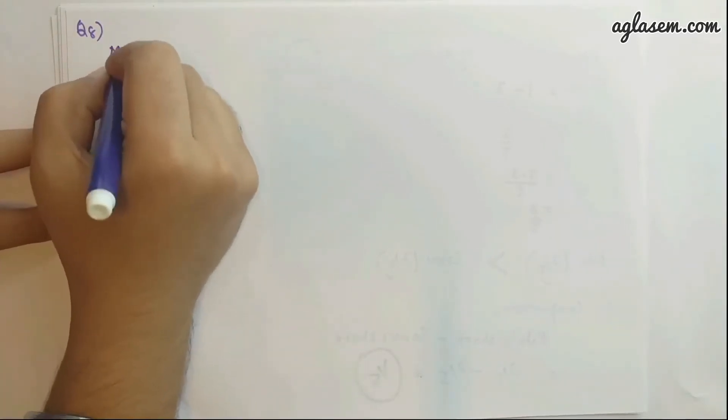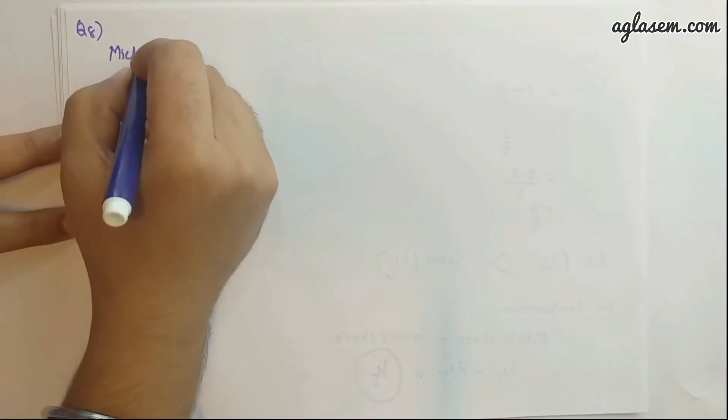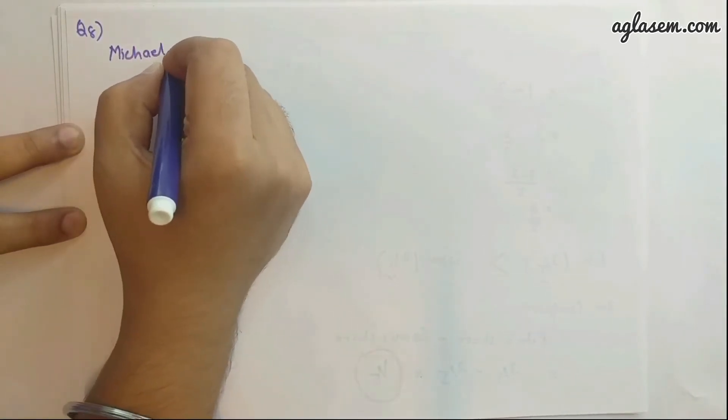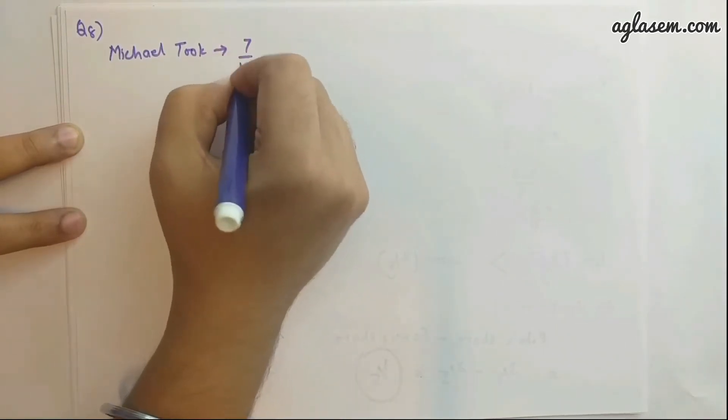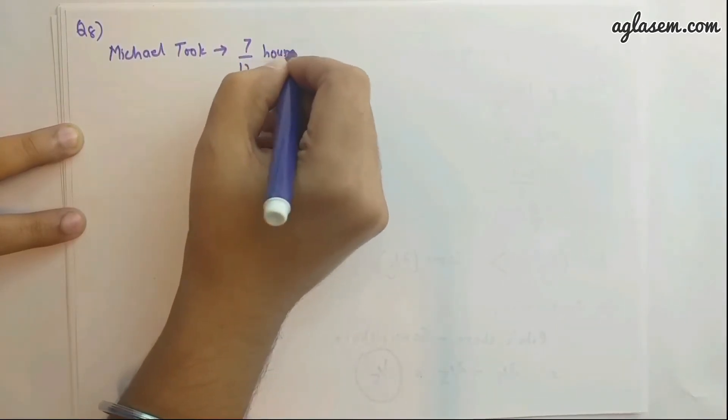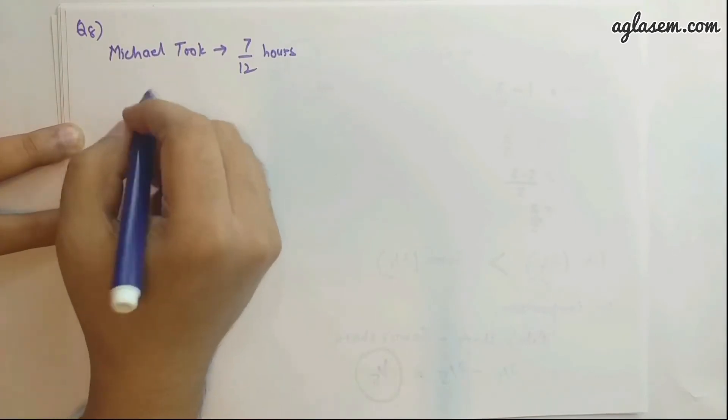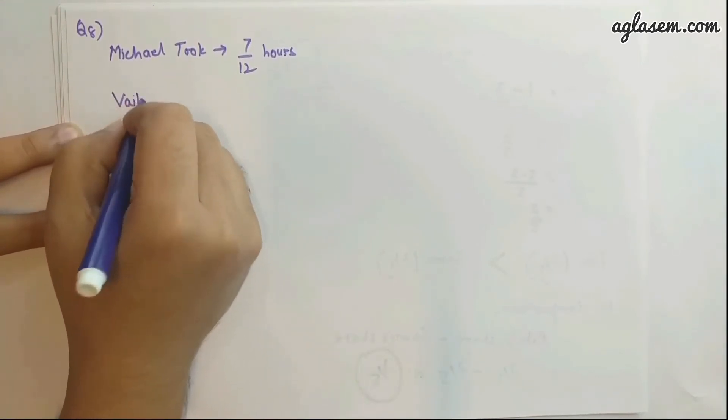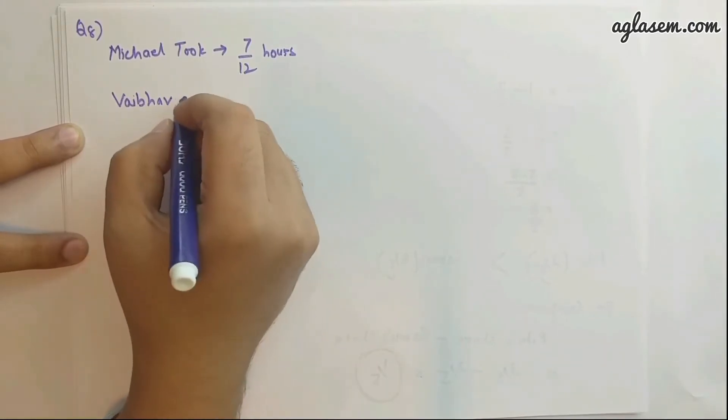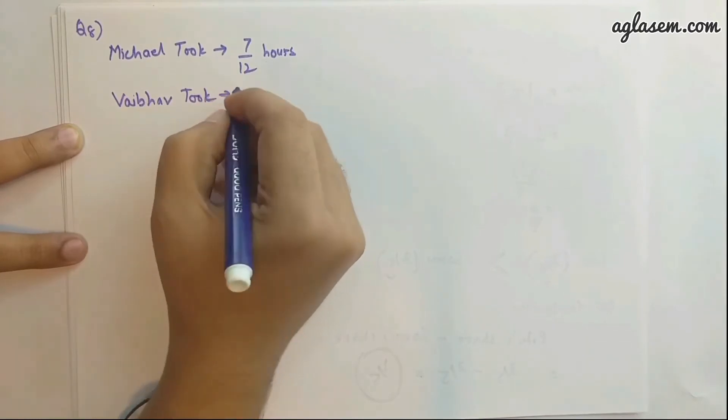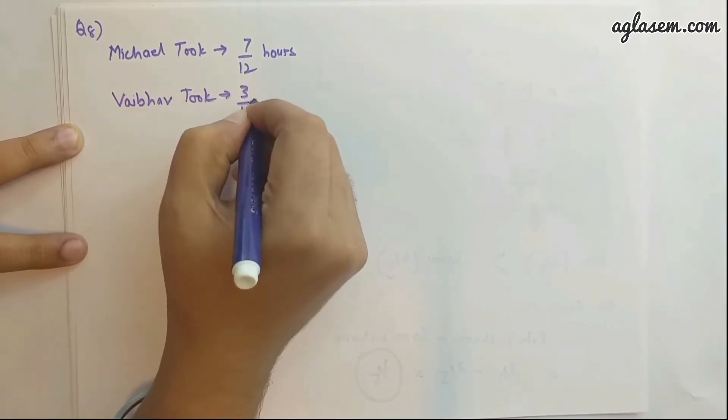Michael took 7/12 hours and Vaibhav took 3/4 hours to paint that particular picture or color that picture.